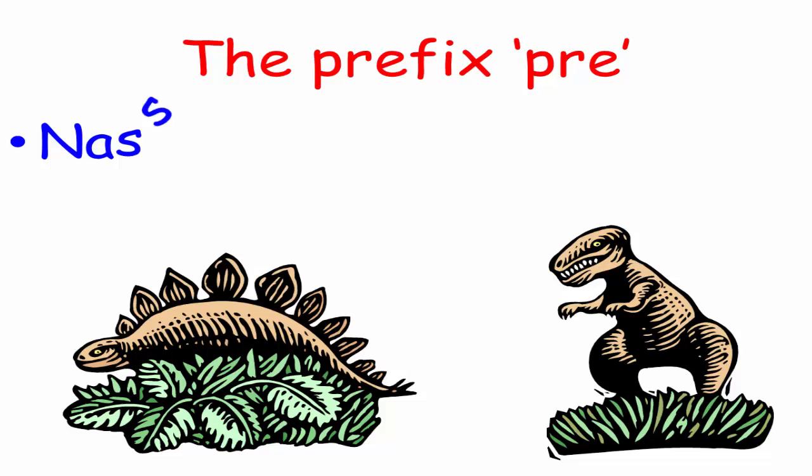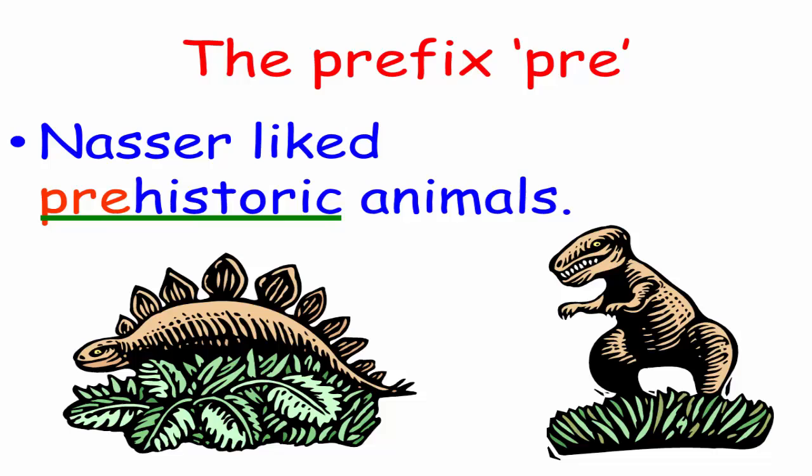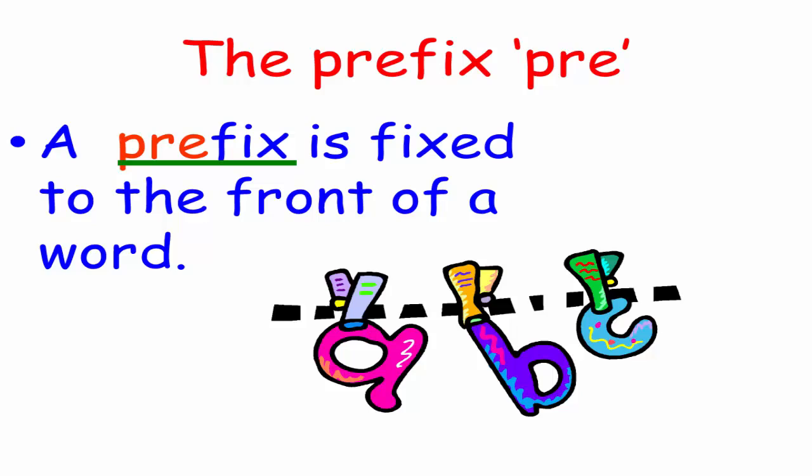Pre, which means before. Nasser liked prehistoric animals, which means animals which are prehistoric, before history. Another example. A prefix is fixed to the front of a word. And of course, our lesson is on prefixes.